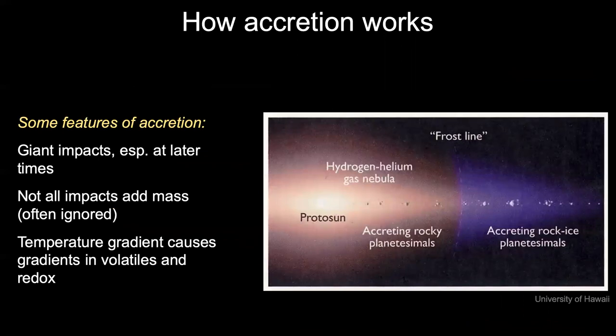A few important features of accretion: it sometimes includes very giant impacts where two large bodies collide, especially at later times during the planet formation process. It's been shown that not all impacts will necessarily add mass to a planet — some might remove mass, though this factor is often ignored in subsequent chemical modeling. The temperature gradient in the disk — hotter near the sun, cooler farther away — causes gradients in volatile abundances and also redox. The transition between where rock and metal form versus where rock, metal, and ice form is called the frost line or snow line. Beyond this point, there are much more volatiles and it's generally thought to have a more oxidized composition.